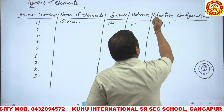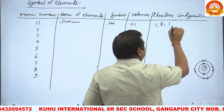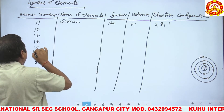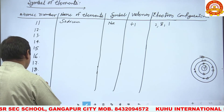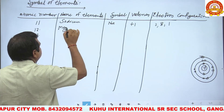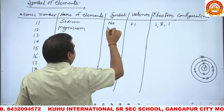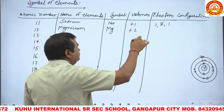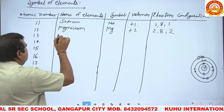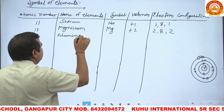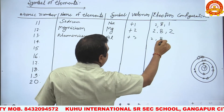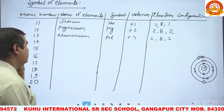The third orbit begins here. Then number 12: Magnesium, symbol Mg, valency +2, electron configuration 2, 8, 2. Number 13: Aluminium, symbol Al, valency +3, electron configuration 2, 8, 3 — as seen in the diagram.